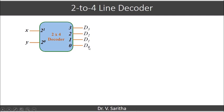So the 0th line we are representing as d naught, first line d1, then d2 and then d3. The operation of the decoder is in such a fashion that only one of the output lines will be 1 at a time.